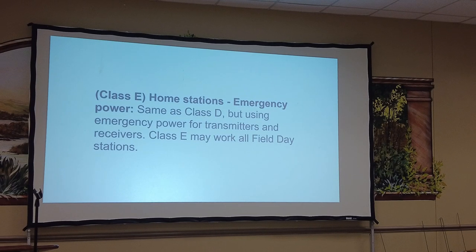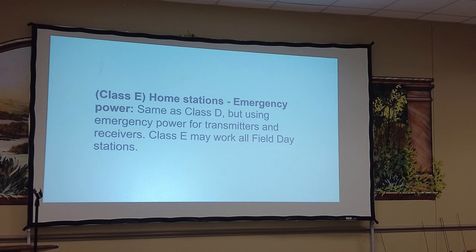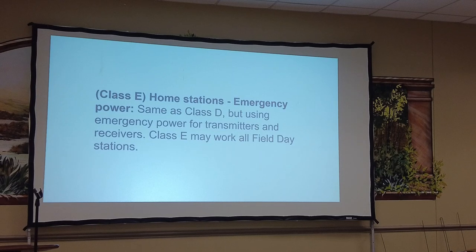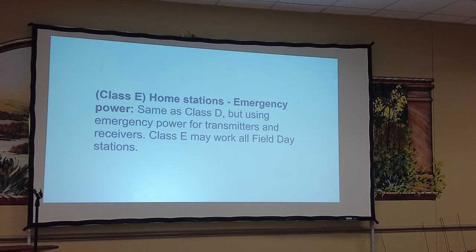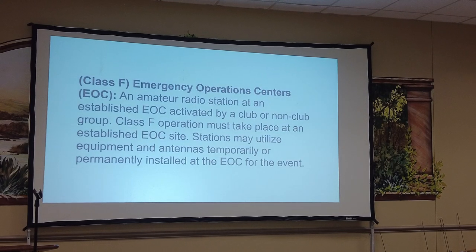D stations are supposed to only contact D stations, though they changed that rule during COVID. An 'F' station is an emergency operations center that is set up and participating in Field Day. Don't be concerned if you hear something like 27 or 28 — there are some clubs that put five stations on all 500 modes. It's probably 28 because now you can only get credit for 20 stations.